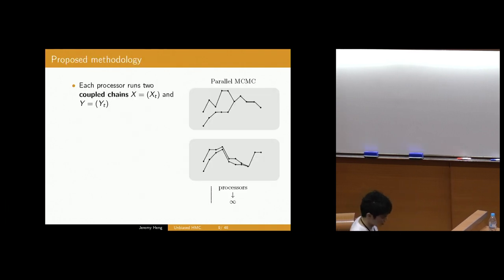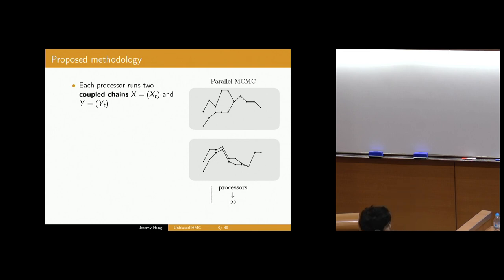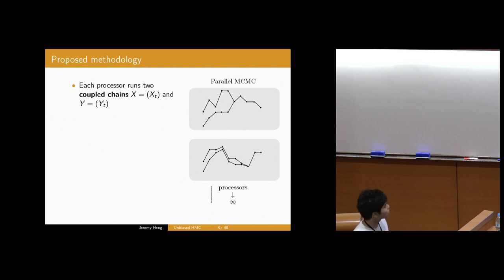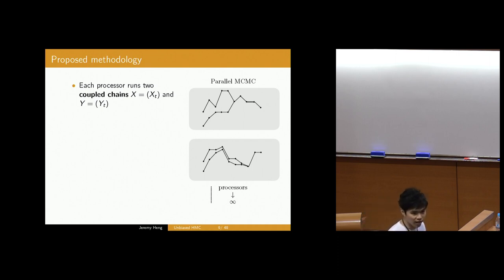Here's a very high-level slide to describe our proposed methodology. What we are proposing is to run two coupled chains denoted by X and Y for each processor. So each processor is depicted as a gray block. We have chain X on top and Y below. These chains are coupled so that after some random number of iterations, they meet exactly. I'll be more precise about what I mean by meeting in the next few slides.